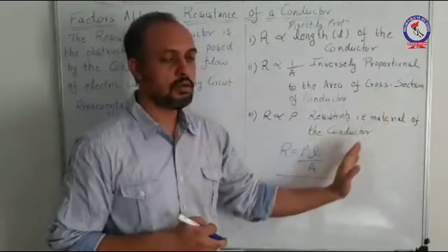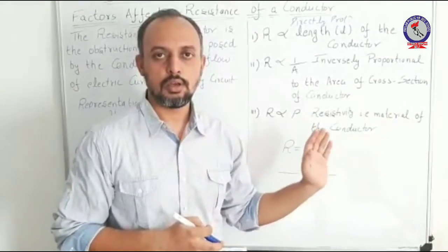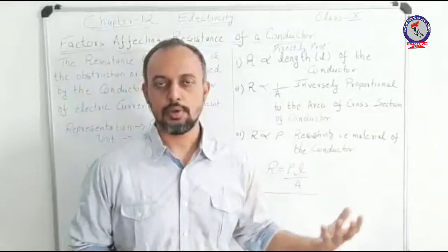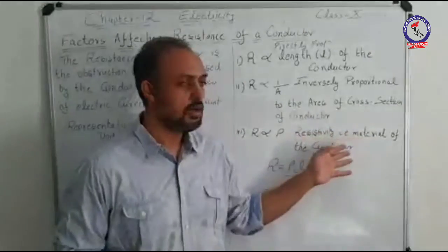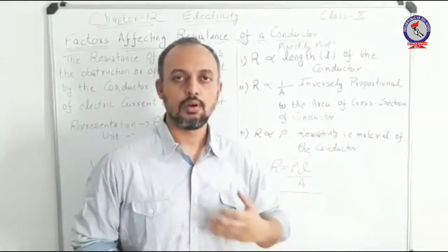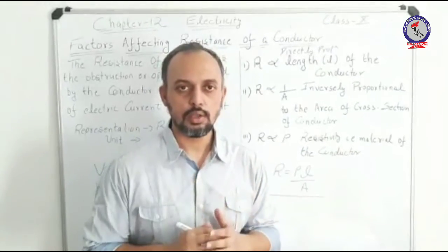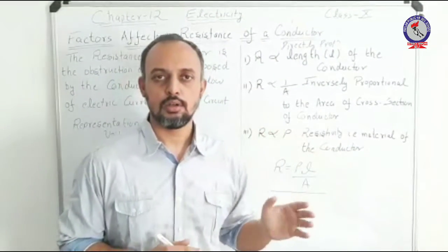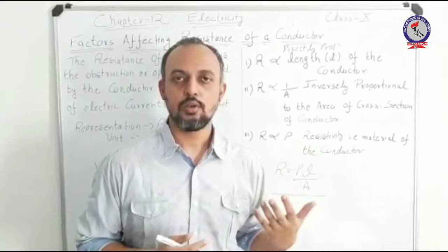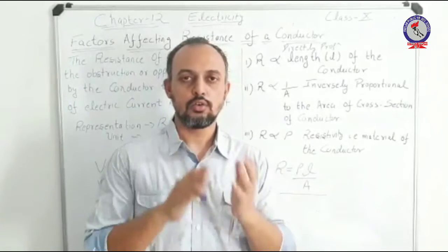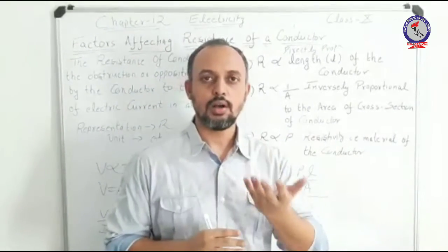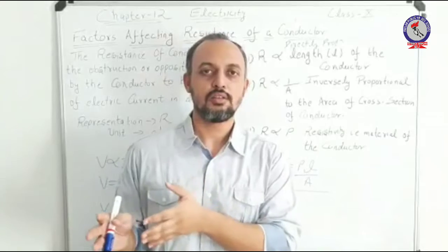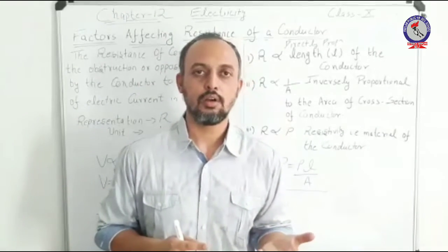With regard to the variation of resistance, it should be kept in mind that if it is asked: if the resistivity of a particular material is varied, what will be the effect on the resistance? You should know that if you are varying the resistivity of a particular conductor, the resistance remains constant. The reason is that resistivity actually depends on the material of the conductor. So the resistance will remain the same because resistivity is dependent on the material of the conductor.